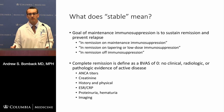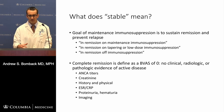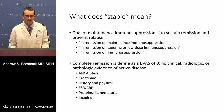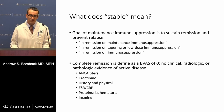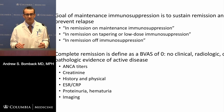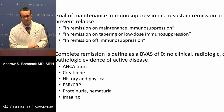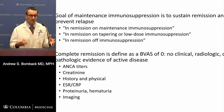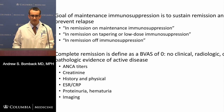What do we call stable? Complete remission in clinical trials is a Birmingham Vasculitis Score of zero — no clinical, radiologic, or pathologic evidence of active disease. In clinic, we use similar parameters: ANCA titers, serum creatinine, history and physical, SED rate, CRP, proteinuria or hematuria, and imaging. You really want no evidence of any active disease before calling someone in complete remission.